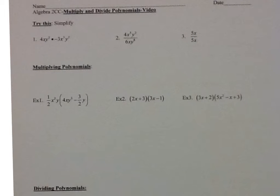Today we're going to talk about multiplying and dividing polynomials. The dividing polynomials will only be doing a polynomial divided by a monomial. The trinomials divided by a binomial will be a little bit later — we will get to those. So remember, when you multiply and you have the same base, you add the exponents. You're going to multiply the coefficients, same base, add the exponents. Give the 'try this' a try — put me on pause, then come back.